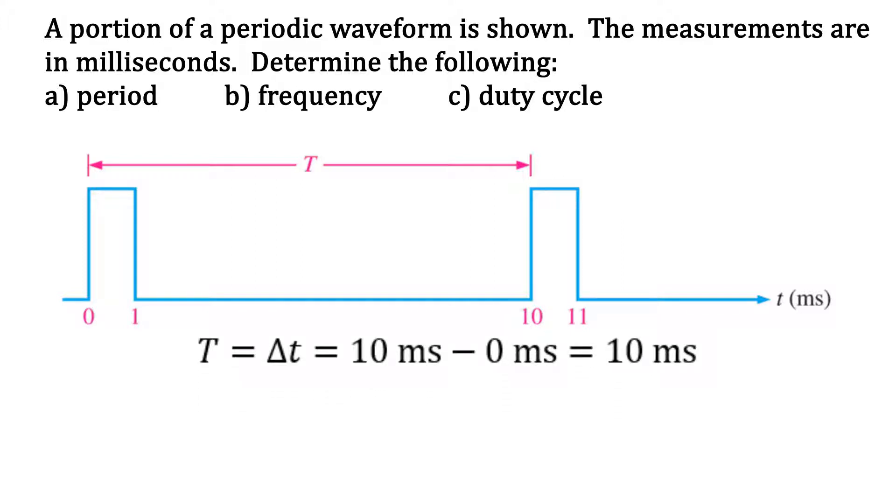Now let's find the frequency. The frequency is the inverse of the period, so F equals 1 divided by T. We now have 1 divided by 10 milliseconds. Because frequency is measured in hertz, which is inverse seconds, we need to convert milliseconds to seconds.